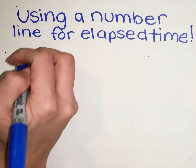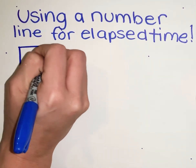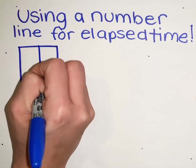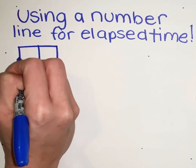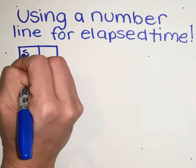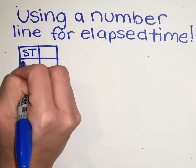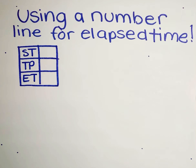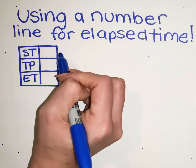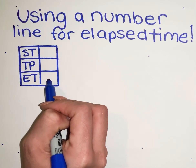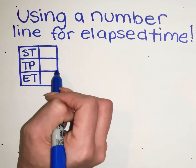What I like to do is have my students make a chart, cut it in half, and then into six sections. This chart represents start time, time passed, and end time — I call it STTPET. Sometimes your word problems will give you the start time, time passed, or the end time, but rarely will they give you all three. Usually there's going to be one unknown.